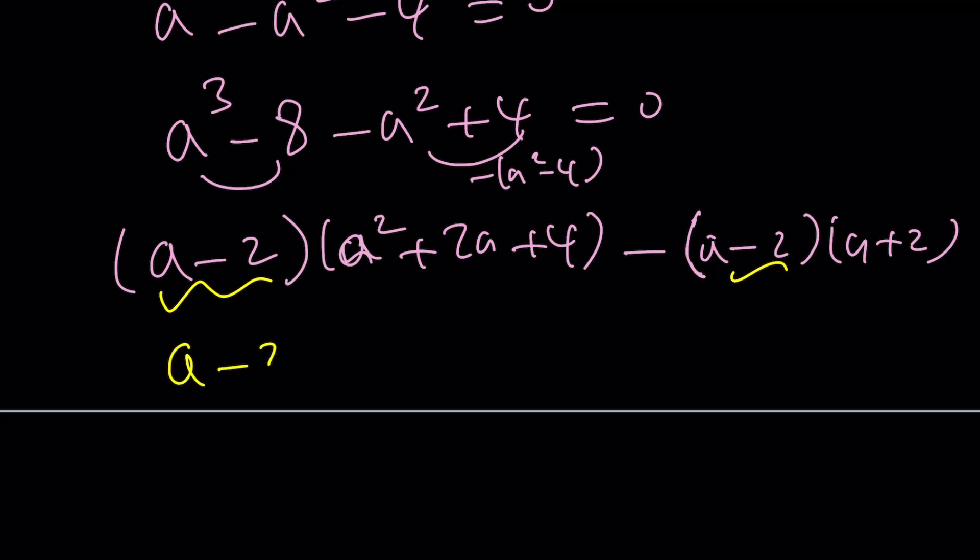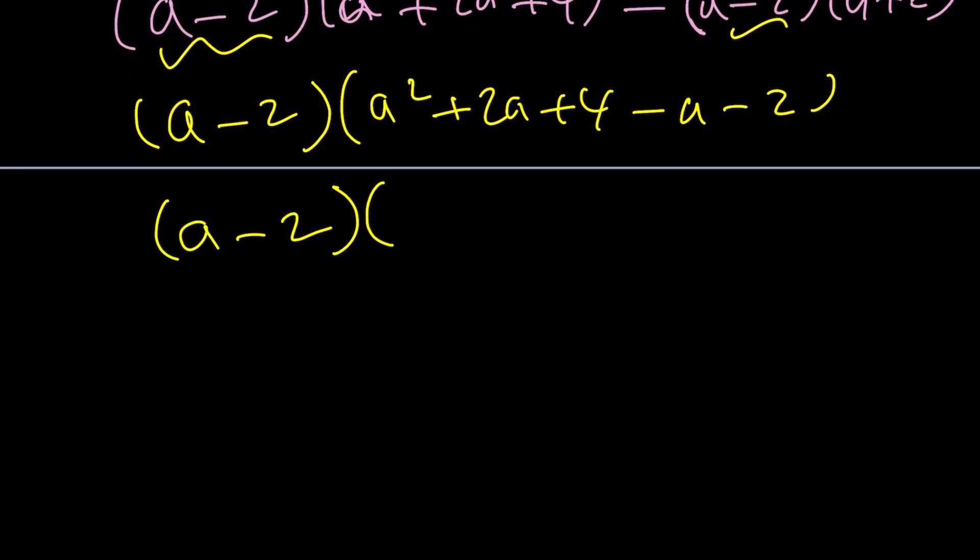And then you're going to get a squared plus 2a plus 4 minus a minus 2. And if you simplify the second factor, you're going to get a squared plus a plus 2 equals 0. Obviously, a equals 2 is already known.